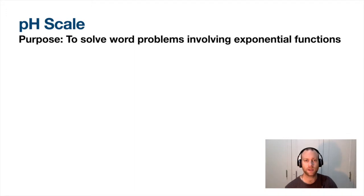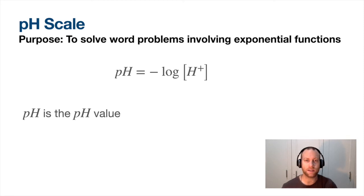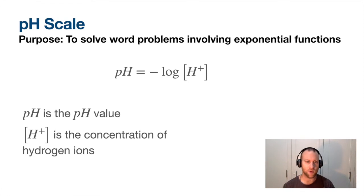pH scale - again, these are all things that can come up, these are very common. Here is the equation for the pH scale. The pH scale just tells you how acidic something is, so comparing between acids and bases you need to know what is the pH scale. pH is just the pH value, it's a number between 1 and 14, I think. The H+ in the square brackets is the concentration of hydrogen ions. You don't really need to know what that is, you just need to know what it is to plug it in the equation.